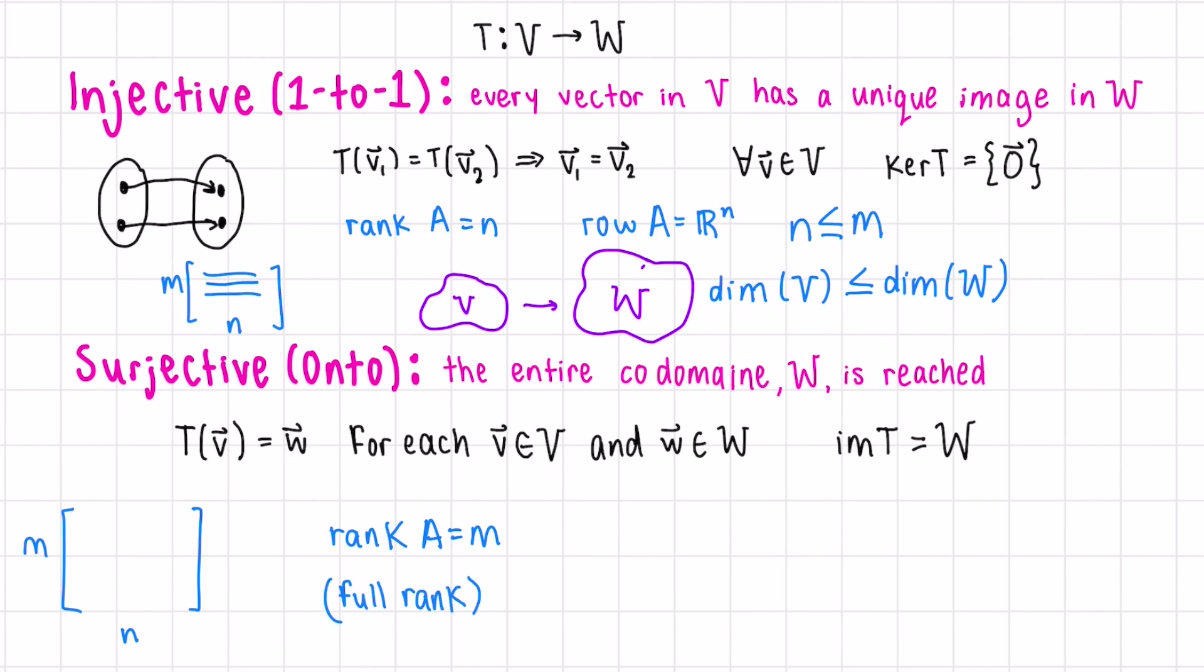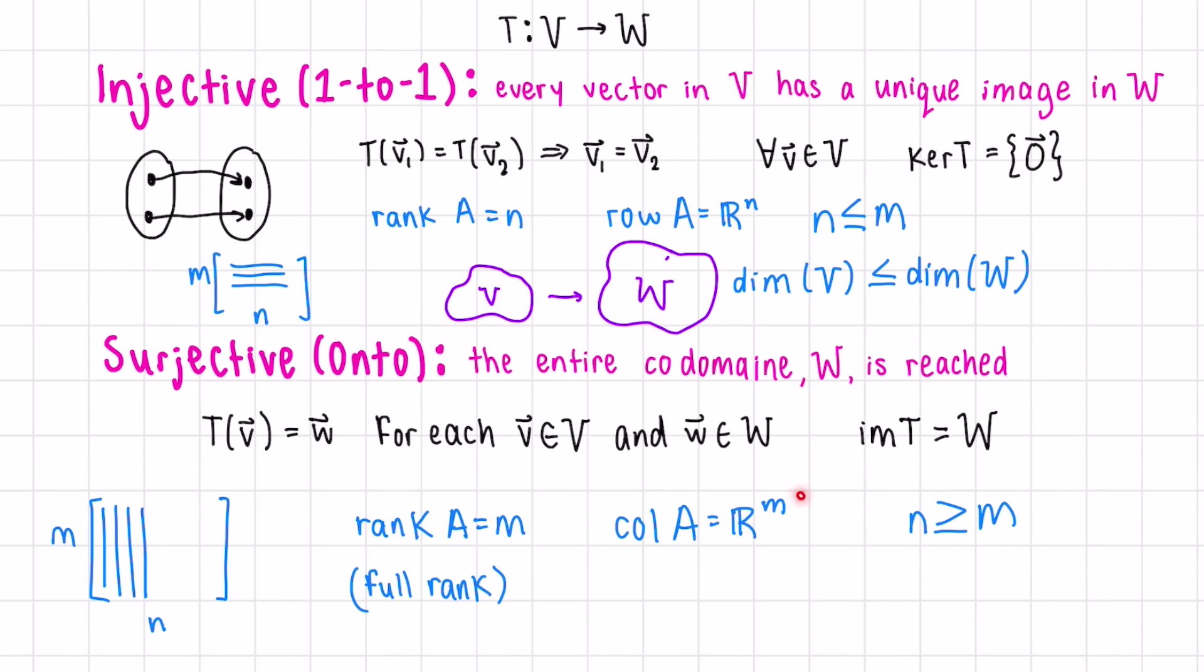This is also equivalent with saying the column space of our matrix A is RM. Remember that the column space is the number of leading columns in our matrix. In order for the column space to equal RM, we need to have at least M columns, if not more. This is why N must be equal to M or greater than M.